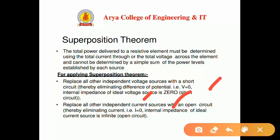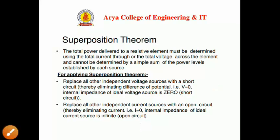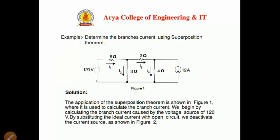Replacing current sources with an open circuit eliminates current — that is, I equals zero — because the internal impedance of an ideal current source is infinite. These are the assumptions for applying the superposition theorem.